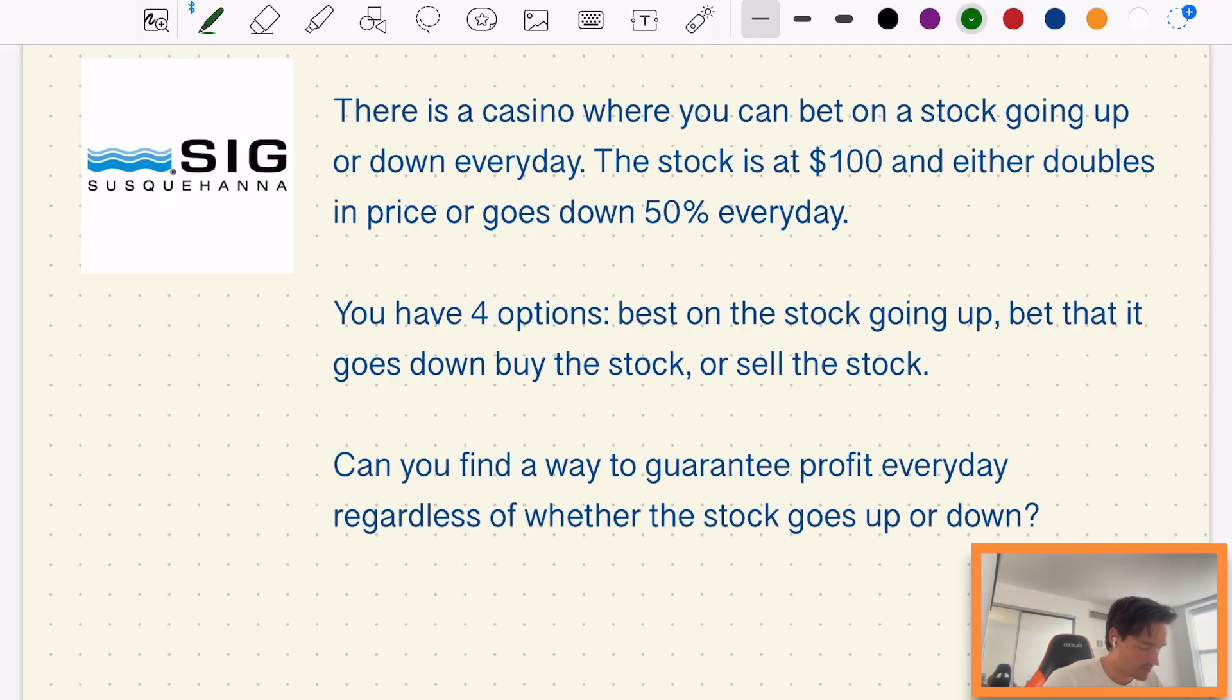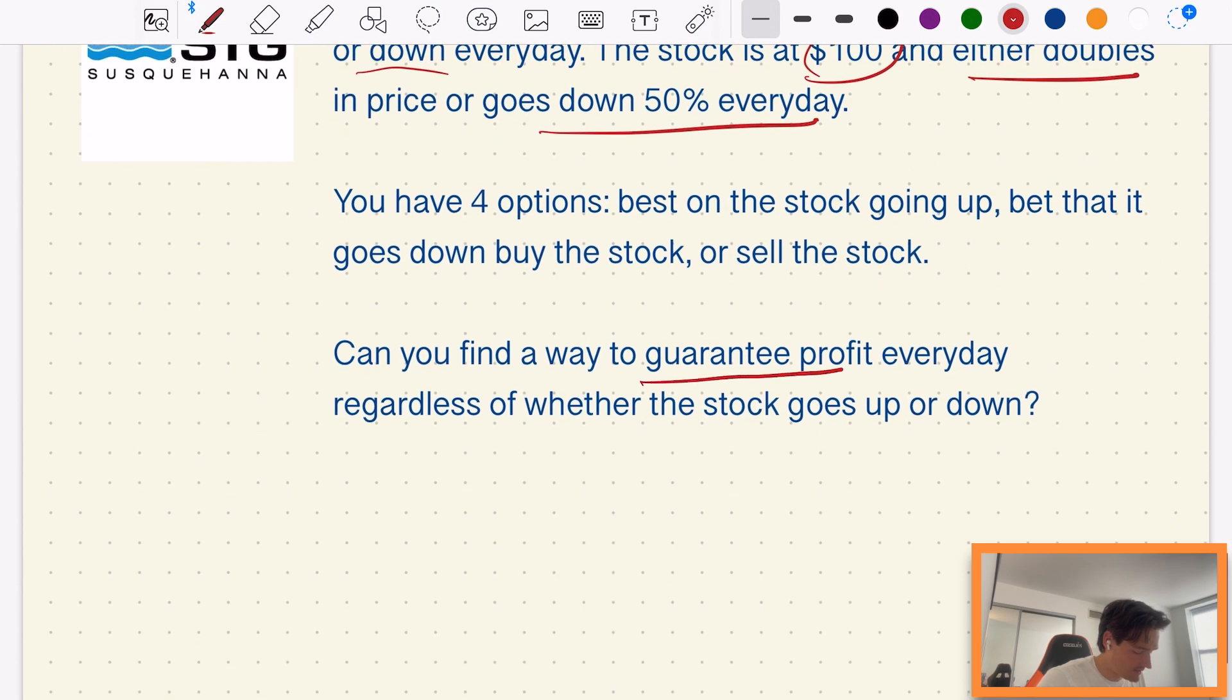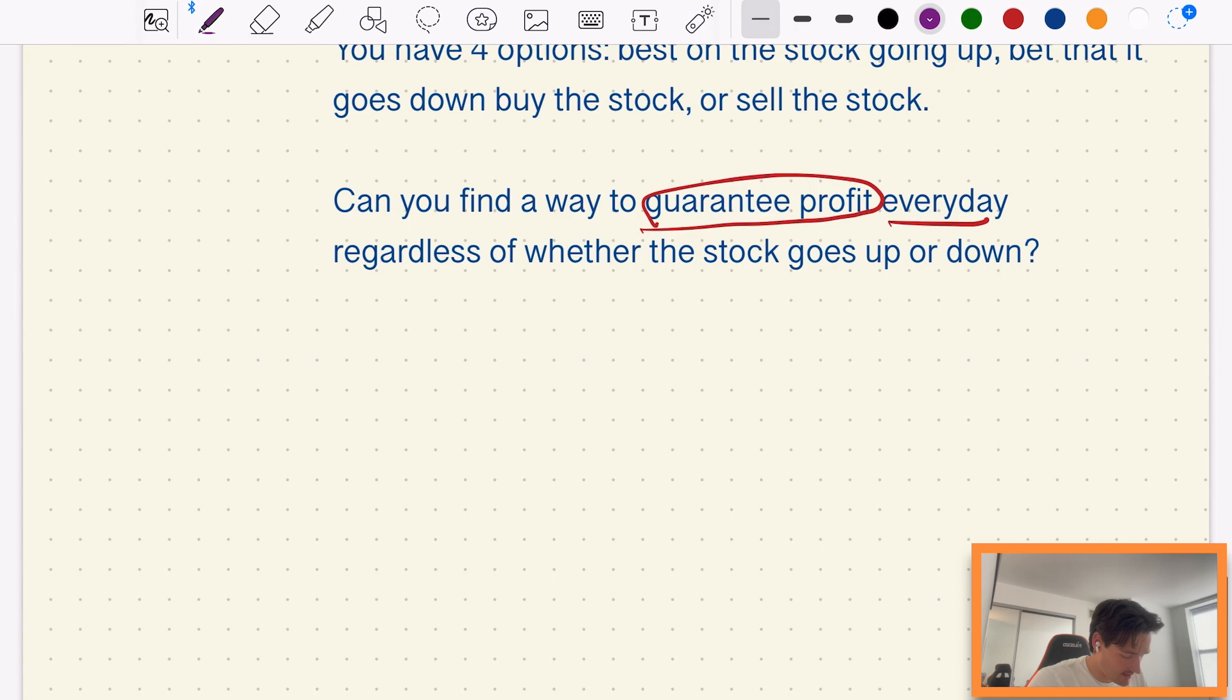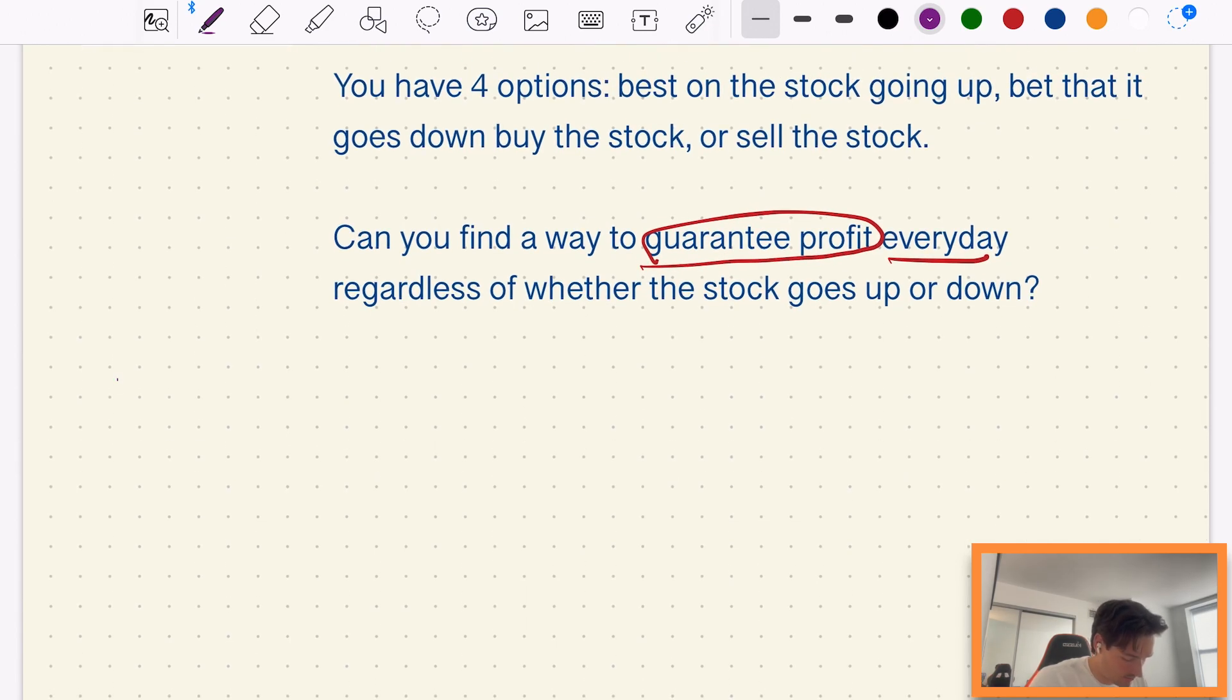So this is the SIG question. There is a casino where you can bet on a stock going up or going down every day. The stock is $100 and either doubles in price or goes down by 50% every single day. We have four options: bet on the stock going up, bet that it goes down, buy the stock, or sell the stock.